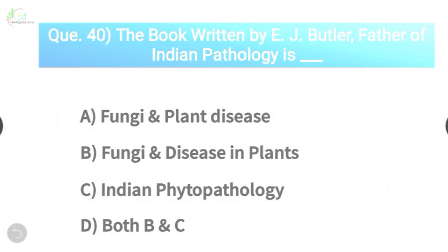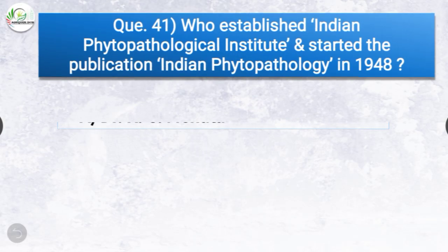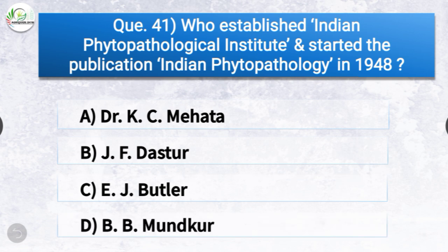Question number forty-one: Who established the Indian Phytopathological Institute and started the publication Indian Phytopathology in 1948? The correct answer is option D, BB Mundkar. BB Mundkar established the Indian Phytopathological Institute and started the publication Indian Phytopathology in 1948.